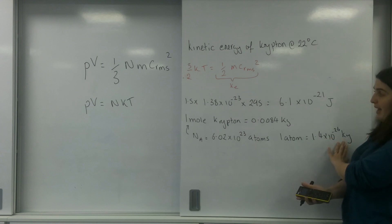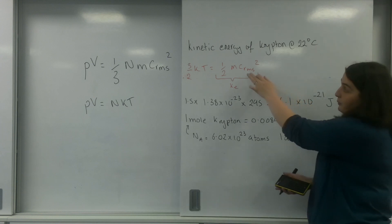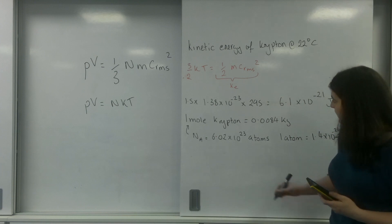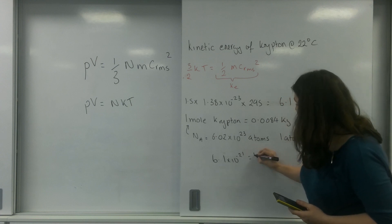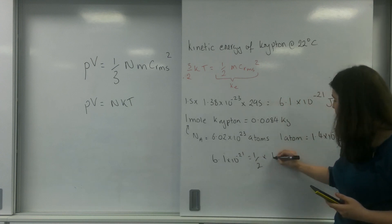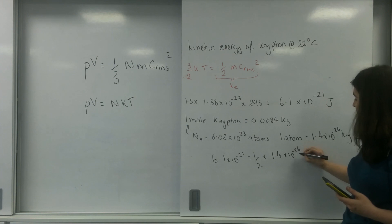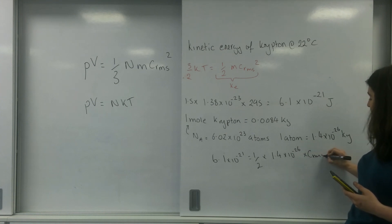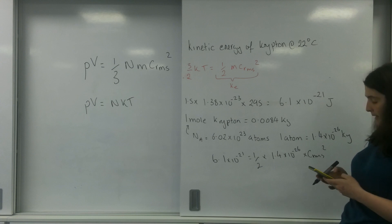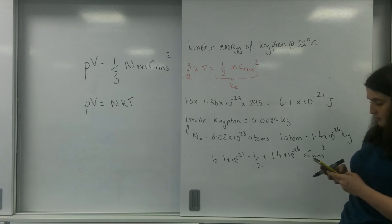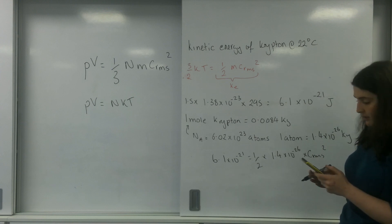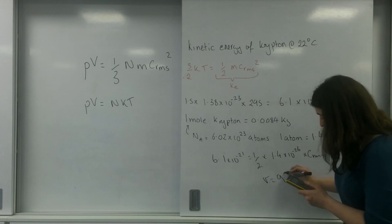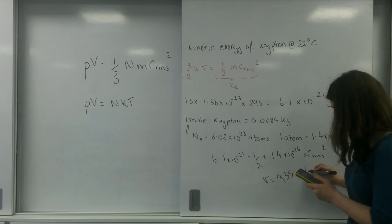I now know the mass and I know the energy, so I could work out the velocity. So 6.1 times 10 to the minus 21 equals one-half times the mass — 1.4 times 10 to the minus 26 — times by C_RMS squared. So 6.1 times 10 to the minus 21 divided by that answer, times by 2, then square root, gives velocity equals 935 metres per second.